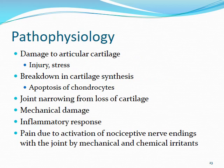The pathophysiology of OA compared to RA is mainly due to articular cartilage damage from injury, stress, and wear and tear over time. This cartilage breakdown leads to chondrocyte apoptosis, joint narrowing, and bone-on-bone contact — much more of a mechanical issue than an autoimmune one. Pain is mainly due to activation of nociceptive nerve endings when joints are affected by mechanical and chemical irritants.